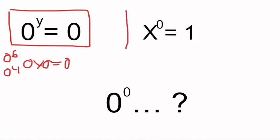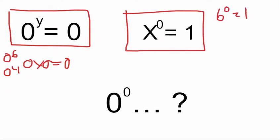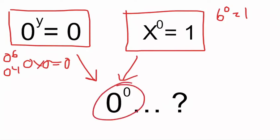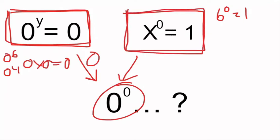Now, any number to the power of 0 is always equal to 1 — so 6 to the power of 0 is 1. But if we put both laws together — 0 to the power of something, and something to the power of 0 — we get 0 to the power of 0. According to one law the answer is 0, and according to the other it's 1. So what we're going to discuss is: is the answer 0 or is it 1?